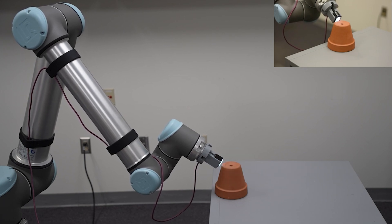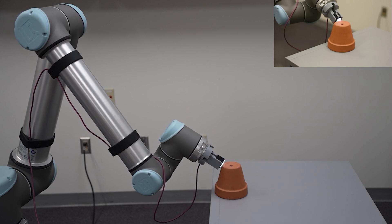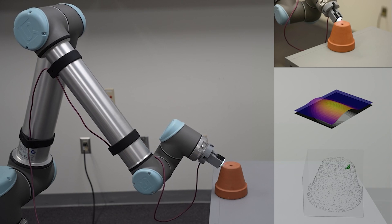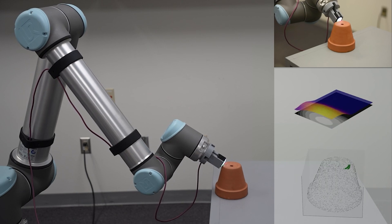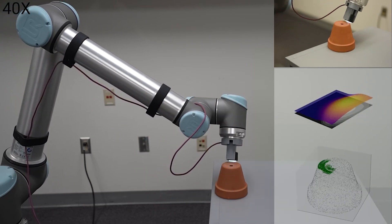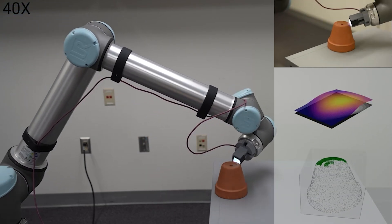To initiate exploration, the arm was directed toward the center of the workspace, ensuring initial contact with the object. To ensure the safe execution of actions generated by our policy, we have adopted a strategy of lifting the digit in the normal direction of the contact after each contact event while running the policy.